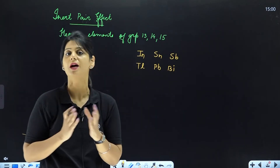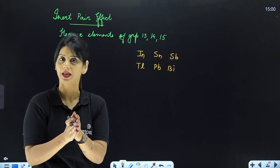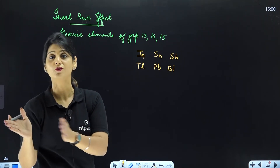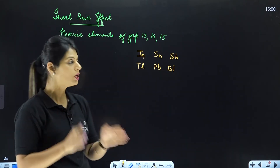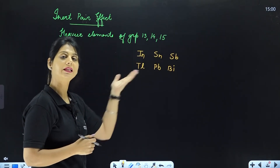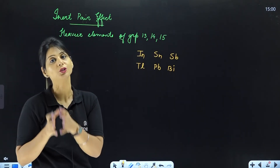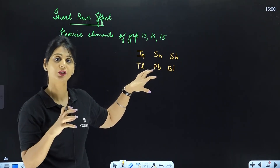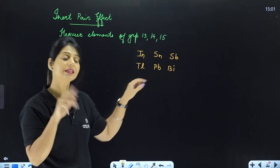Because d- and f-electrons have poor shielding effect, the nuclear force of attraction on the valence electrons increases. The nucleus holds the valence shell more tightly. So for these elements, which have filled d- and f-electrons with poor screening effect, the nuclear charge effectively increases on the valence shell.